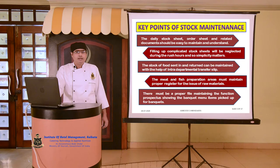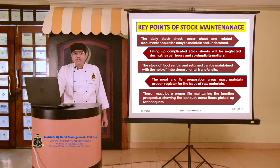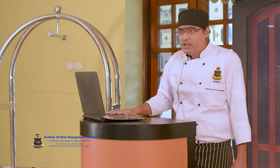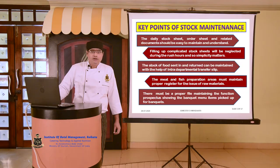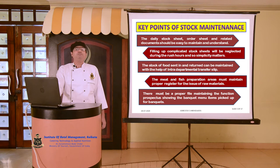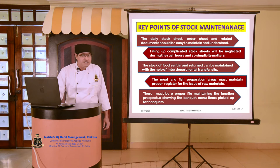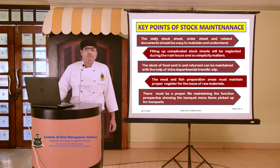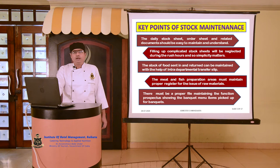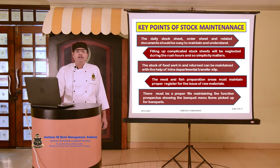The meat and fish preparation areas must maintain proper registers for the issue of raw material, showing which quantity of meat has gone to which section of the kitchen. It must also record what kind of cut, processing, and fabrication has been undertaken for that particular meat product, as this has a direct reflection on the yield percentage. There must also be a proper file maintaining the function prospectus showing the banquet menu items picked up, since banquets go for bulk pickup of larder items.